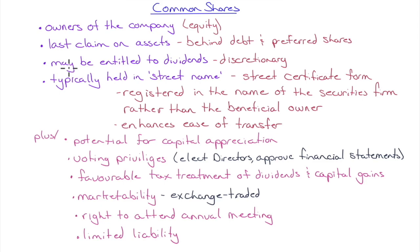Common shares are typically held in street name. When you buy stock, it's held at your brokerage firm in the name of the financial institution rather than in your own name. That's called a street certificate form — registered in the name of the securities firm rather than the beneficial owner. This enhances ease of transfer, but you don't lose any privileges: you still have voting rights and still receive dividends.